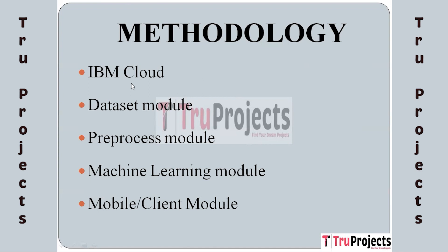The first module is IBM Cloud. This module utilizes IBM Cloud for machine learning algorithm storage and execution. Patient vitals from mobile devices are sent to the cloud for algorithm-based health condition detection. Due to cost constraints, a simulated cloud runs on a local network. SMS alerts to doctors are omitted due to expense. The second module is the Dataset Module, which facilitates dataset uploading to the simulated cloud environment.